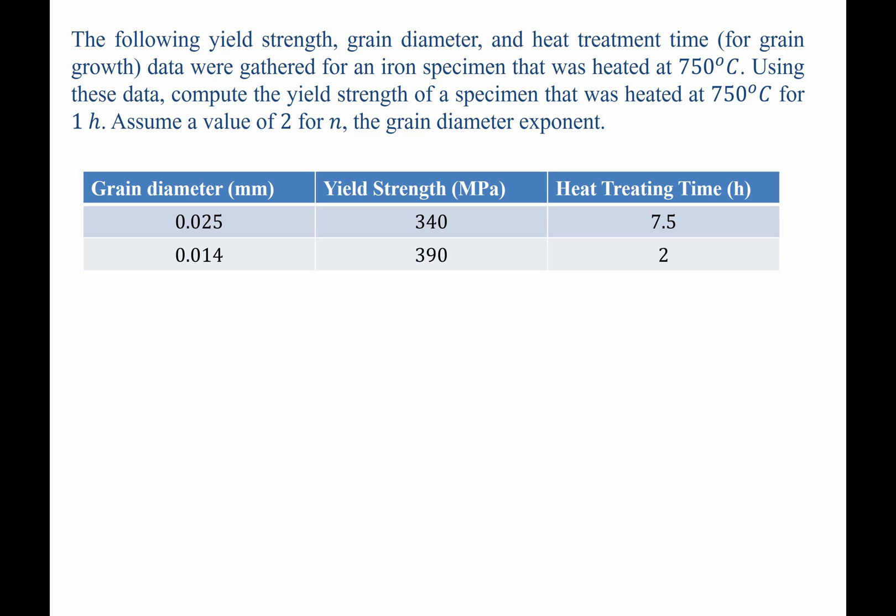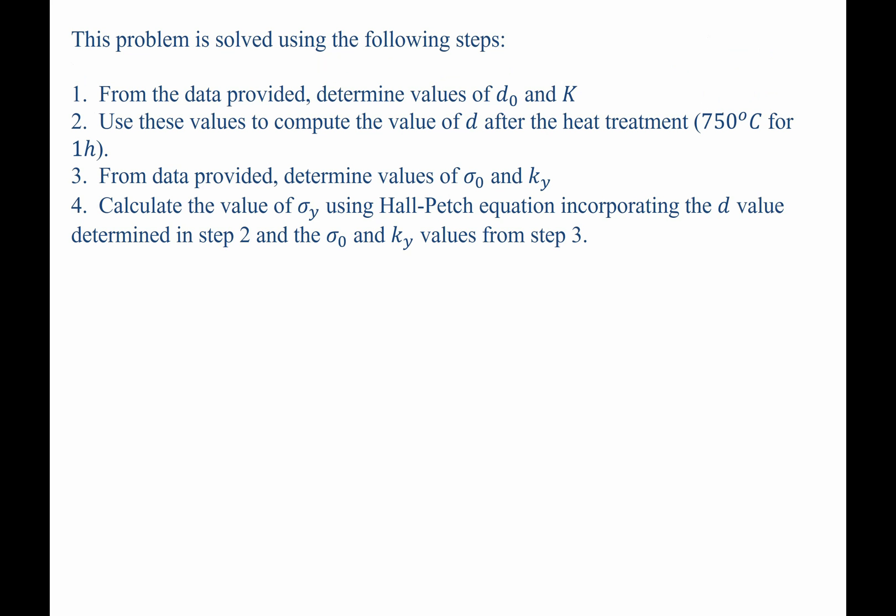Assume a value of 2 for n, the grain diameter exponent. This problem can be broken down into a number of steps. Step 1, we're going to use the data provided to determine values of d-naught and K, the constants from the grain growth expression.